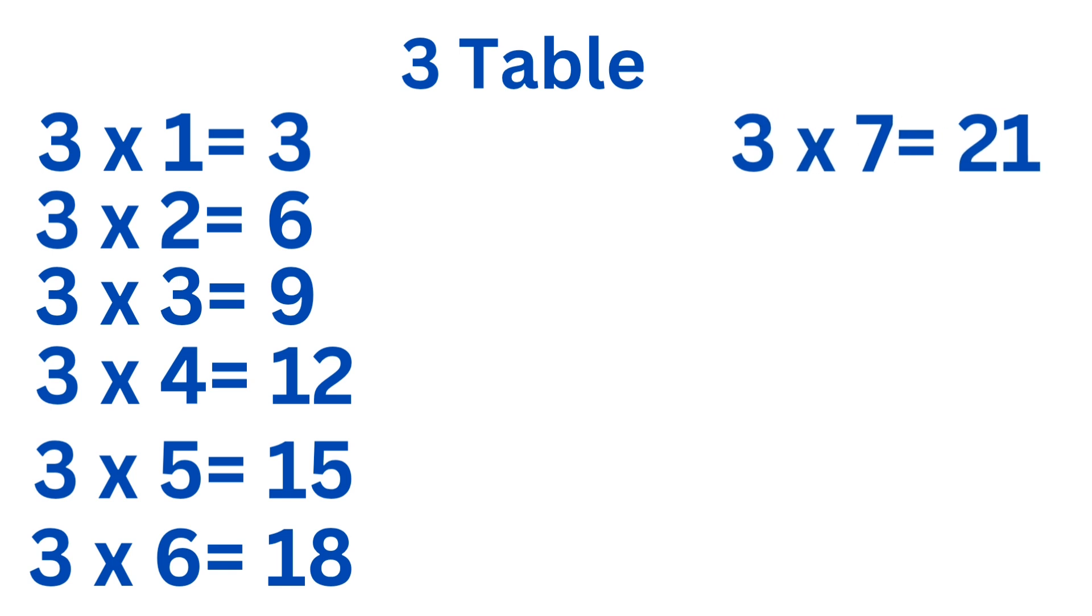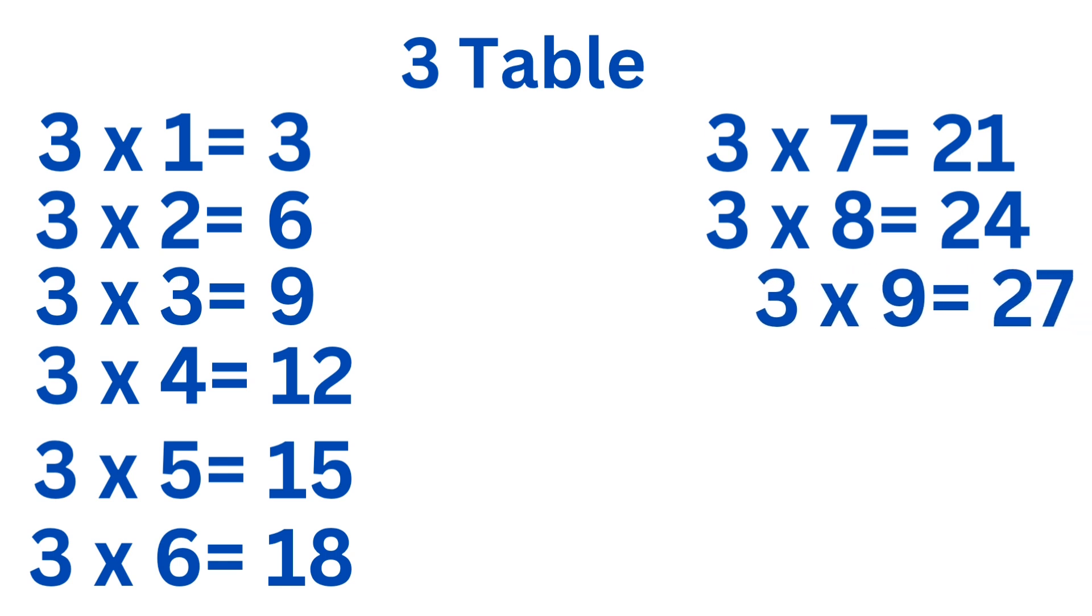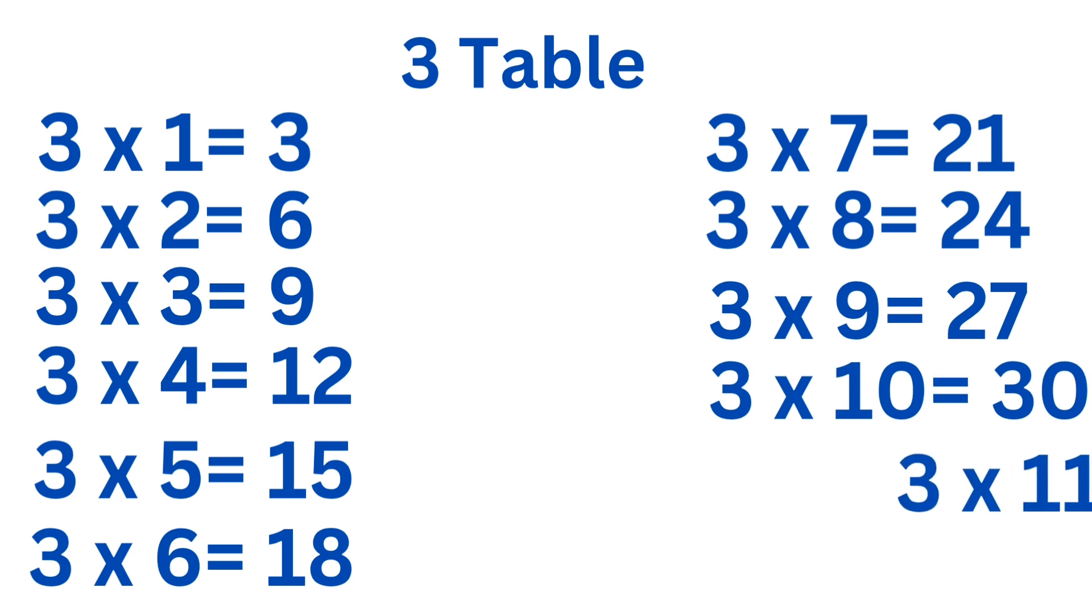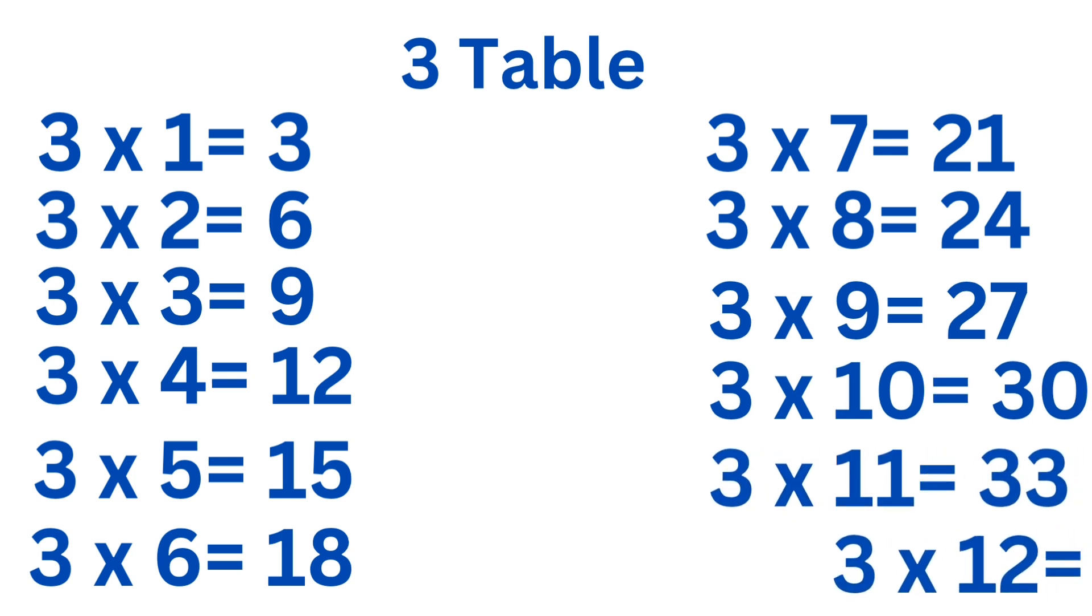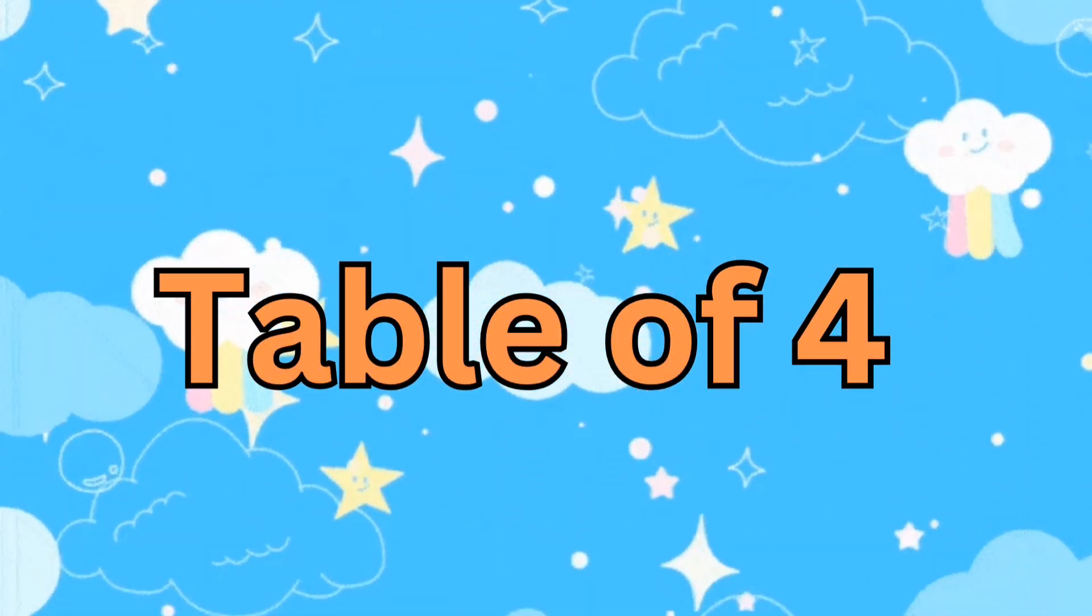3 7s are 21. 3 8s are 24. 3 9s are 27. 3 10s are 30. 3 11s are 33. 3 12s are 36. Table of 4.